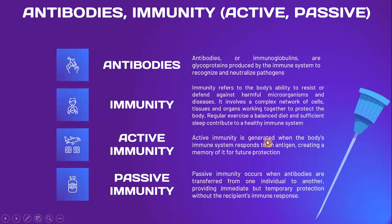Antibodies, also called immunoglobulins, are glycoproteins produced by the immune system to recognize and neutralize pathogens. Immunity refers to the body's ability to resist or defend against harmful microorganisms, diseases, and pathogens. It involves a complex network of cells, tissue, and organs that work together to protect the body. Regular exercise, a balanced diet, and sufficient sleep contribute to a healthy immune system. Active immunity is generated when the body's immune system responds to an antigen, granting a memory of it for future protection. Passive immunity occurs when antibodies are transferred from one individual to another, providing immediate but temporary protection without activating the recipient's immune response.